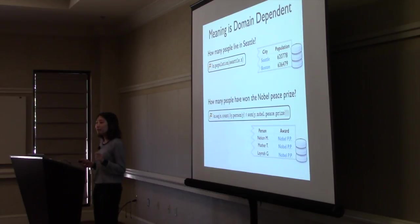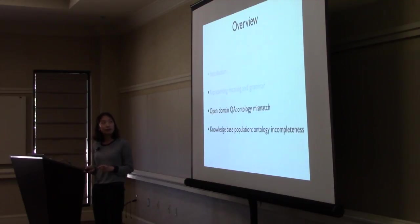The problem when mapping a natural language query to a knowledge base is that the meaning representation you should aim for is dependent on the domain. Even though it has the same expression, like 'how many people live in Seattle' or 'how many people have won the Nobel Peace Prize,' depending on which part of the knowledge base you're looking at, even inside the same knowledge base, it should be mapped to different logical forms. This complicates learning a bit, so we built this open-domain question answering system that can handle these ontological mismatches.